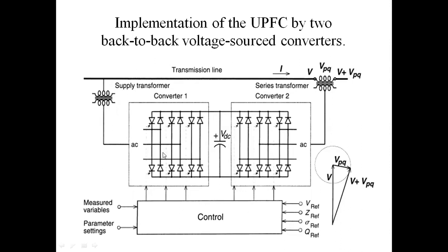This is the three-phase, three-level, three-phase two-level converter. Here, each thyristor is connected with an anti-parallel diode — six thyristors connected in anti-parallel diode configuration. Here, this is the voltage V — the transmission line voltage V. This Series Compensator generates voltage VPQ. This is the resultant voltage V plus VPQ — transmission line voltage plus the Series Compensator injecting voltage.